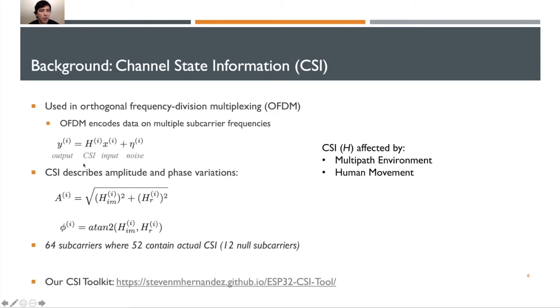CSI is estimated using the equation shown here. The main thing we want to look at is H, which is our CSI. It's a complex vector which contains an element per subcarrier with a real and imaginary component. If we take those real and imaginary components, we can derive amplitude and phase. For our system, we have 64 subcarriers and 52 of them contain actual CSI and the rest are null.